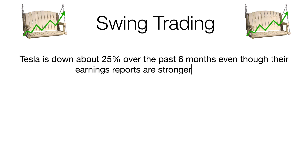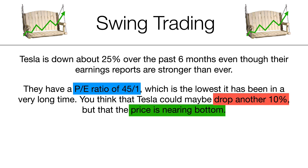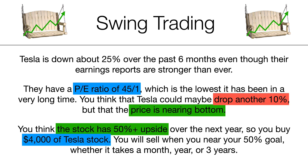Let's say Tesla is down about 25% over the past six months, even though their earnings reports are stronger than ever, and they have a PE ratio of 45 to one — the lowest it's been in a very long time. You think Tesla could drop another 10%, but you really think the price is nearing a bottom, so the risk-reward is very good. You've been studying this stock and you think it has a 50% plus upside over the next year. So you buy $4,000 of Tesla stock and sell it when it nears that 50% increase goal — whether it takes a month, a year, or three years. That's why it's called a swing trade: you buy it and sell it on a swing whenever it reaches the right price.